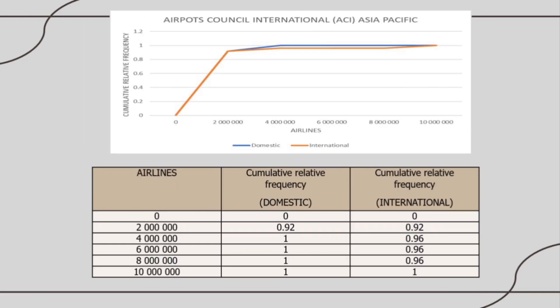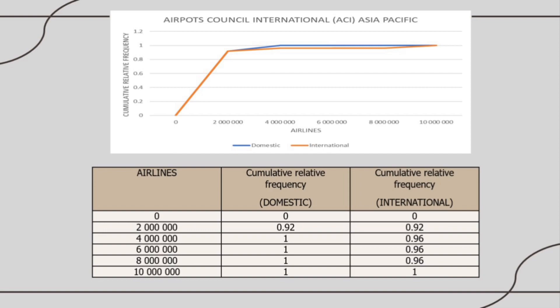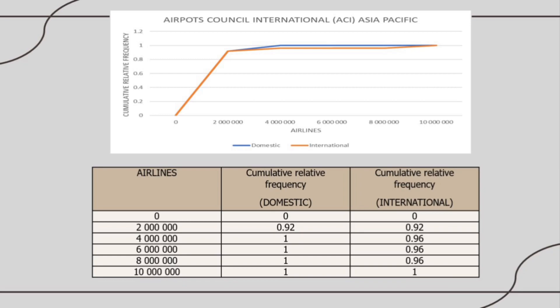This is the table that shows the data of the cumulative relative frequency for domestic and international. As we can see here, the ogive shows that domestic is increased until class 4 million and stays maintained after that. For the international, it also increased until class 4 million and stays maintained after that, but after class 8 million, it increased again.